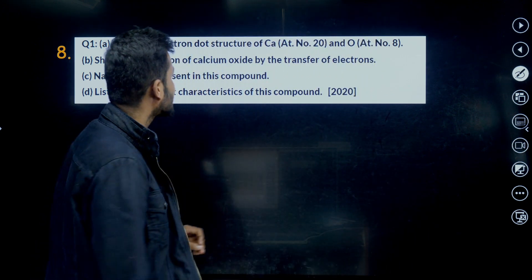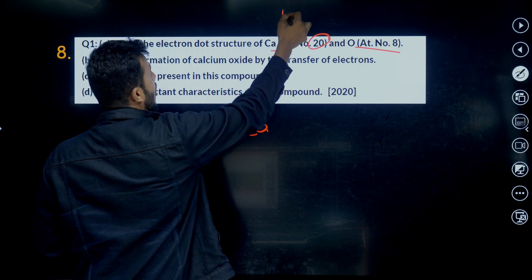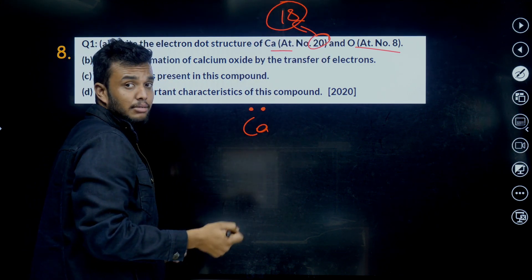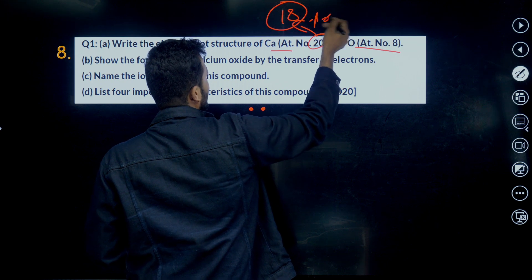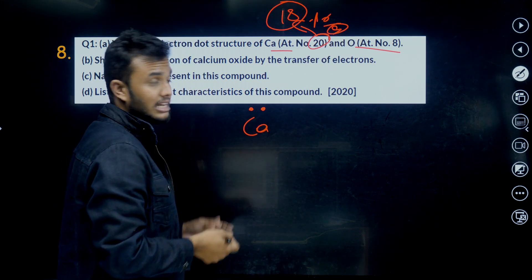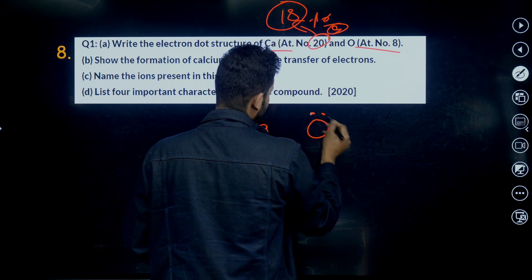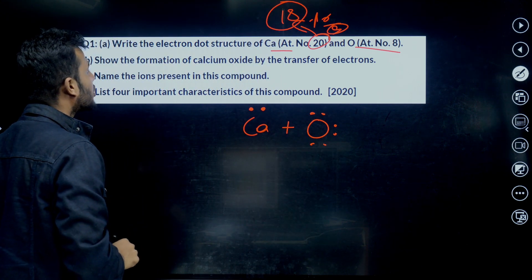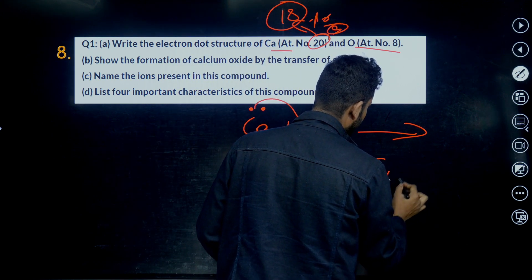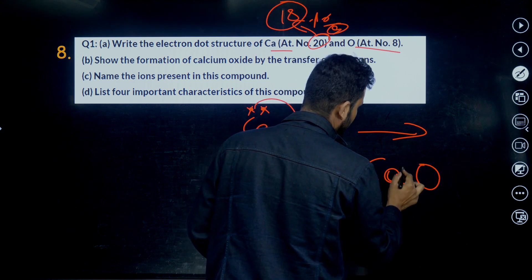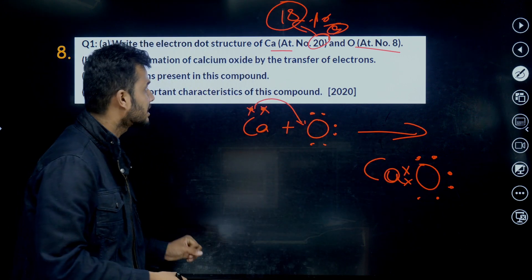Eight one. Write the electron dot structure of calcium, atomic number. They only give oxygen. Calcium. What is the valency? Calcium valency is plus two. 18 electrons are present, right. Which atom is present? 18 - helium, neon, argon. And another two electrons are there. It consists of two electrons in its valence shell. And oxygen? This is the valency. And also second question: Show the formation of calcium oxide by transferring electrons. This electron is transferred here and to form CaO. This is the formation, CaO formation.